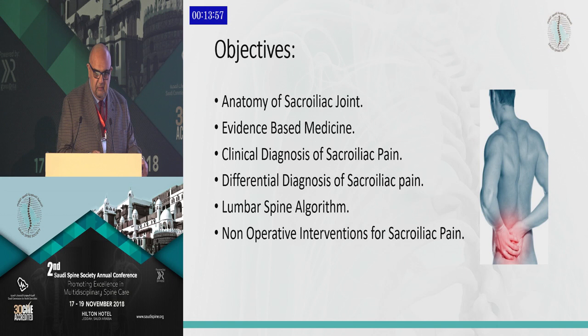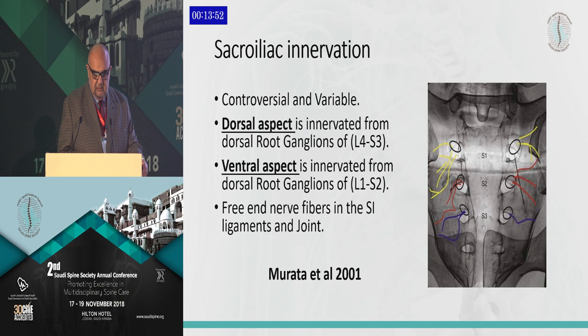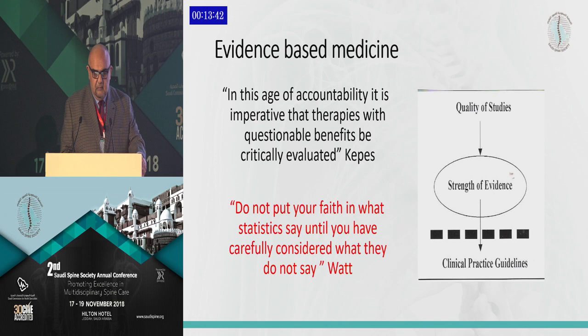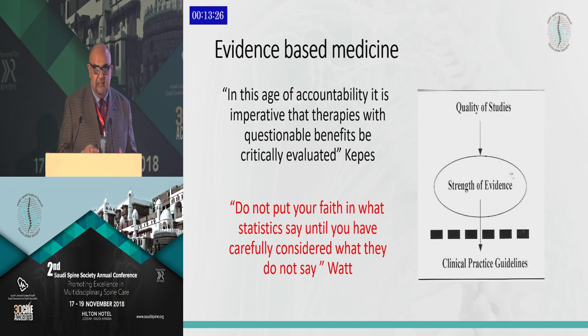I'm going to skip some of these slides because my colleagues discussed it before. Sacroiliac anatomy — the innervation, generally speaking, it's controversial. The dorsal aspect is L4 to L3, and the ventral aspect is L1 to L2. As a practitioner, you want to be this filter in the middle — you want to gather the information and then process it before you proceed to use it in your clinical practice.